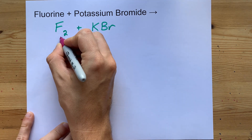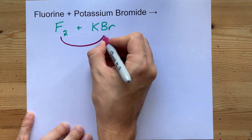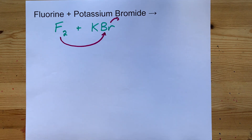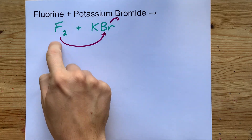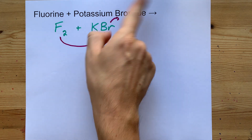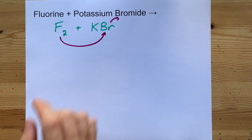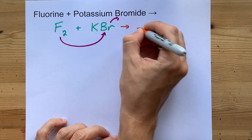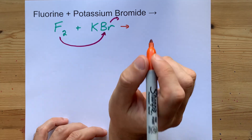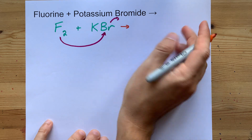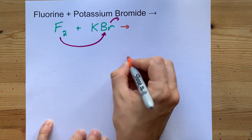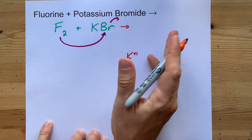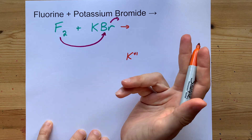So what that means is that the fluorine will take the place of the bromide. I like drawing arrows to show the F kicking the bromine out of its pairing with potassium. That means you end up with potassium and fluorine bonded together. I want to point out that potassium likes having a charge of plus one, as shown on the periodic table — it's in column one.